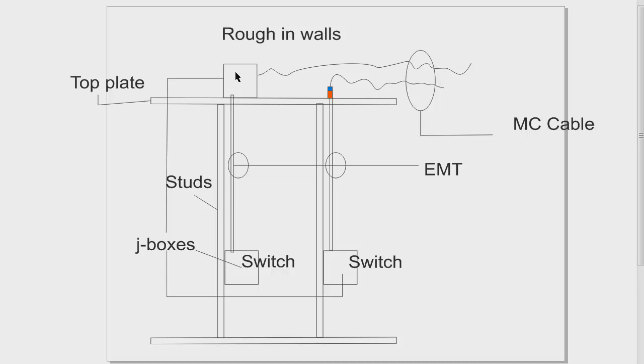That's good if you have multiple runs of MC going in there or home run, another EMT home run of wire. But if you just have one MC that you need to take down to your switch without having to make up a J-box and mount that all up and above you can use the EMT to MC connector.